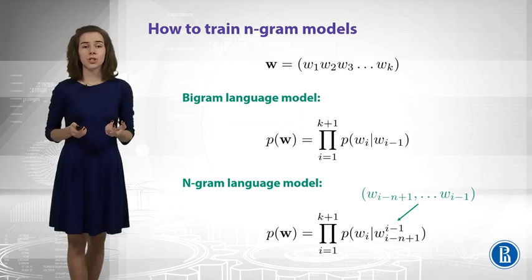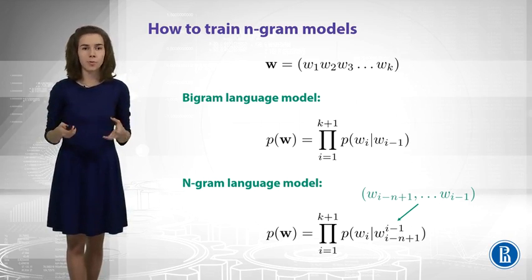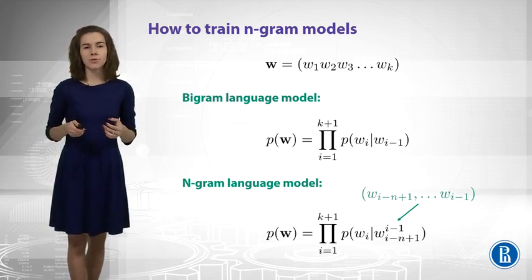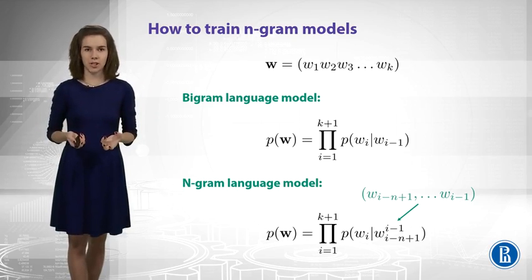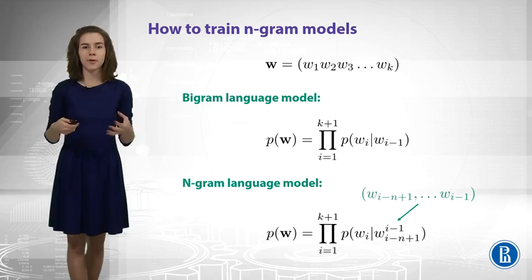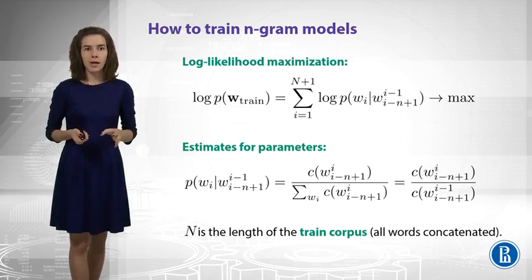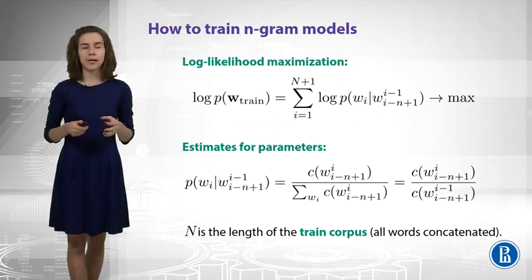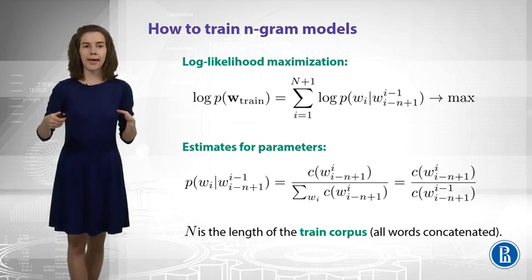Great. We have some intuition how to estimate these probabilities. You remember that we can just count some n-grams and normalize these counts. But now, I want to give you not only just intuition, but mathematical justification. We have some probabilistic model, and we have some data, and we want to learn the parameters of this model. What do you do in this case? What you do is likelihood maximization. By W-train, I denote here my train data - this is just a concatenation of all the training sequences that I have, giving a total of big-N tokens.